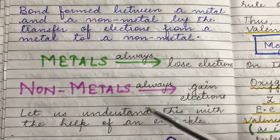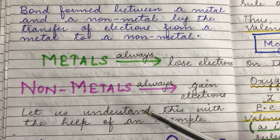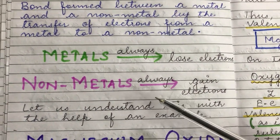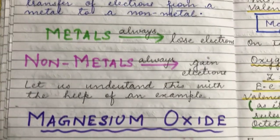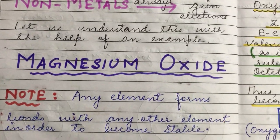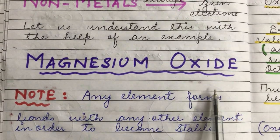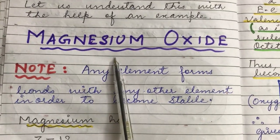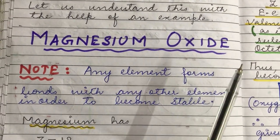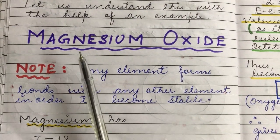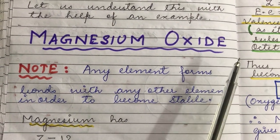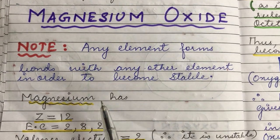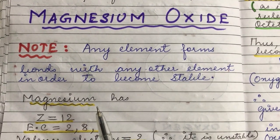To review the concept, you can refer to the video links shared in the description box related to points to remember about metals and non-metals. Now let us try to understand ionic bond formation with the help of the example of magnesium oxide. Magnesium oxide is formed by the combination of magnesium and oxygen. Magnesium is a metal and oxygen is a non-metal. First, you need to know why any element forms a bond.